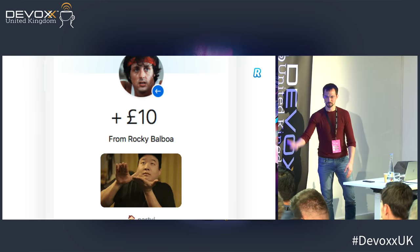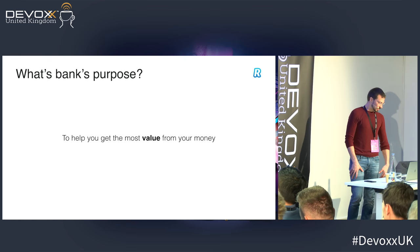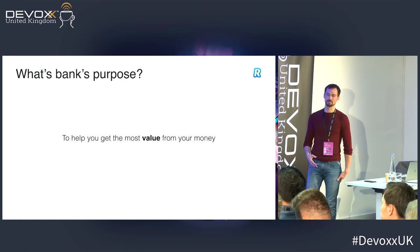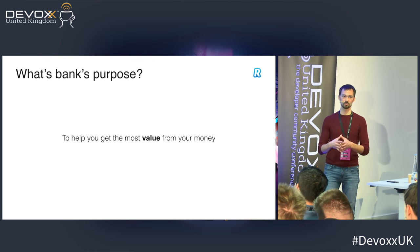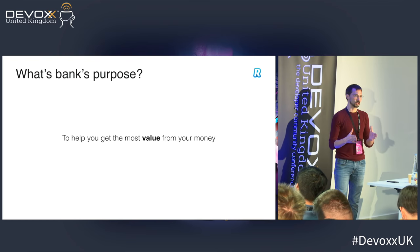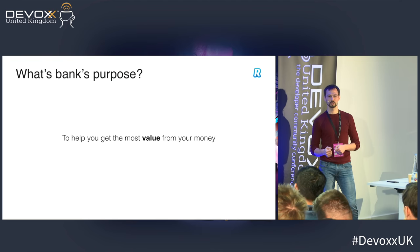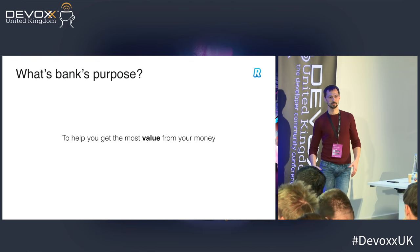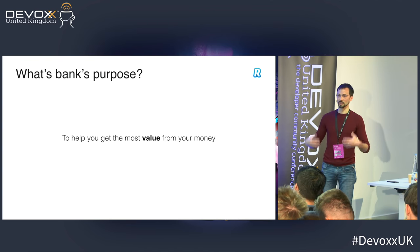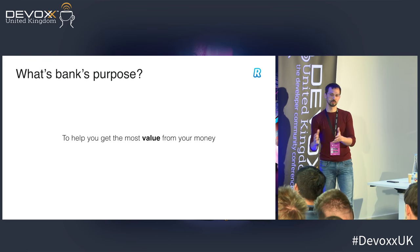How we see it — the main purpose of the bank is to help you get the most value out of your money. This is how we see our purpose in general, despite being used mainly for currency exchange and travel. That's how we started — with that problem first. Then we naturally started growing, Revolut as a business, into other areas, thinking about how to help you get more value out of your money.